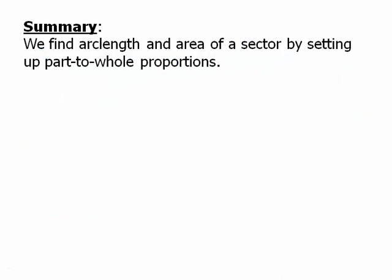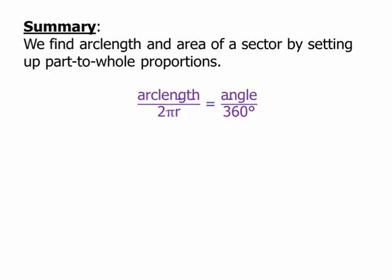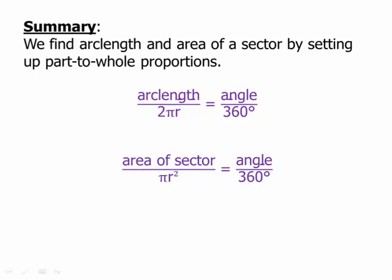In summary, we find arc length and area of a sector by setting up part-to-whole proportions. Arc length over the circumference 2πr equals the angle over 360. Or similarly, area of the sector over πr² also equals angle over 360. In both cases, we're figuring out how much of the circle we have on each side of the equation.